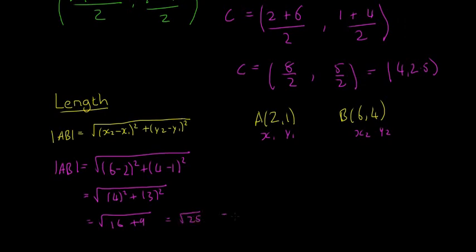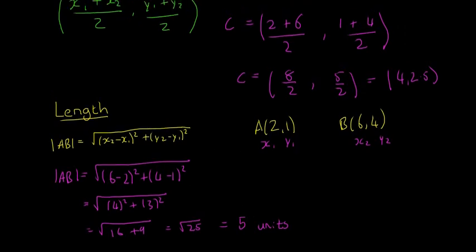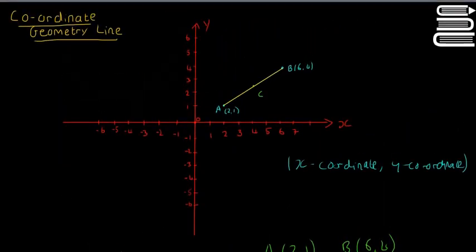That's equal to the square root of 16 plus 9, square root of 25, which is equal to 5. So that's the length and you just say units all the time, because you don't know if it's centimeters or meters. That's how to get the length between two points.